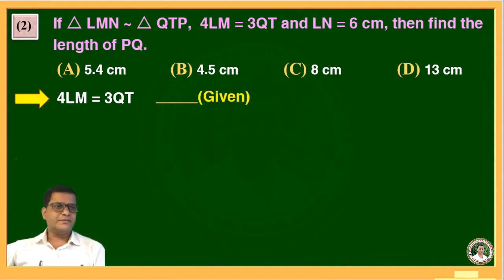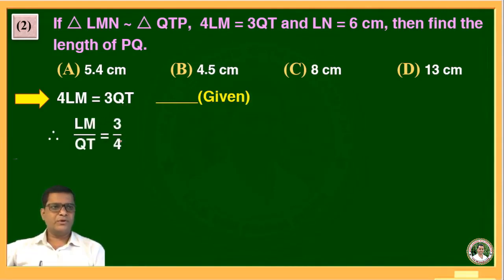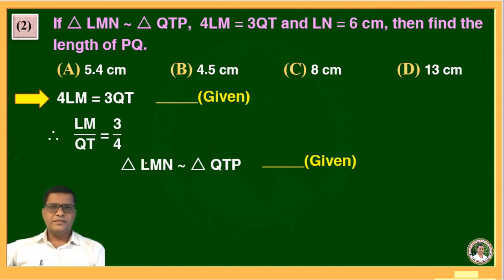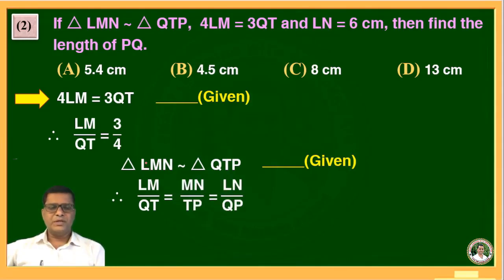To write the answer, first write down the given: 4LM is equal to 3QT. Simplifying this, LM upon QT is equal to 3 upon 4. Since triangle LMN is similar to triangle QTP, and if two triangles are similar then corresponding sides are in proportion. Therefore, LM upon QT is equal to MN upon TP is equal to LN upon QP.